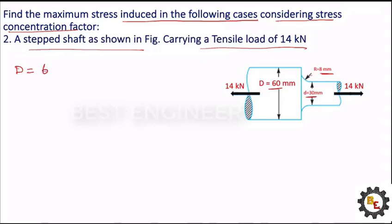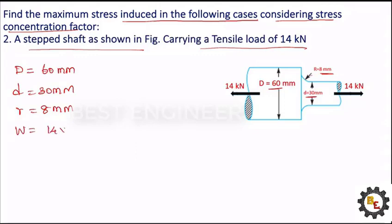Maximum diameter is 60 millimeters, minimum diameter is 30 millimeters, radius of the fillet is 8 millimeters, and the load is 14 kilonewtons, that is 14 × 10³ newtons.